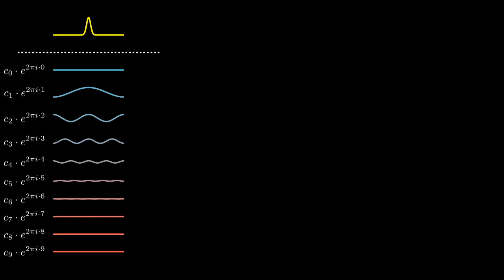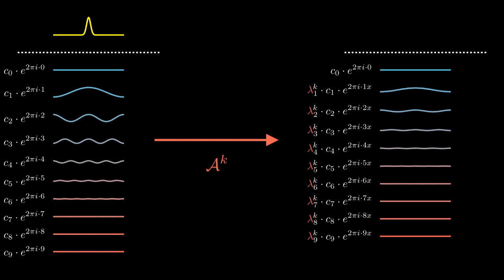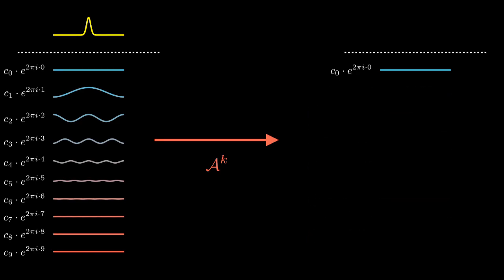The averaging operator has the effect of multiplying all the imaginary exponential functions with their respective eigenvalue. Indeed, because these exponential functions are eigenfunctions. Note that the constant function is fixed, and all other eigenvalues are in absolute value strictly smaller than 1. This means that if we apply the averaging operator many times, the eigenvalues get raised to the power k and tend to 0. So, eventually we can remove all non-constant terms and we are left with only the uniform distribution.